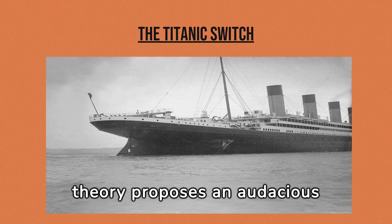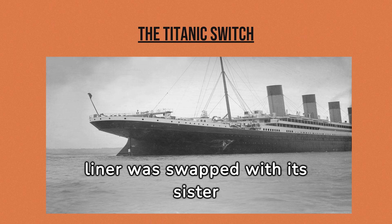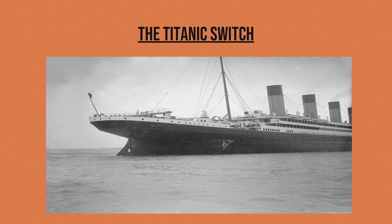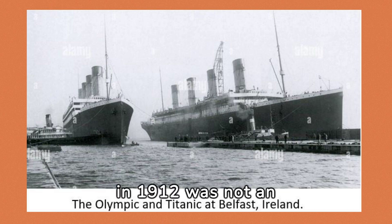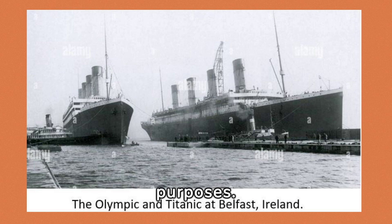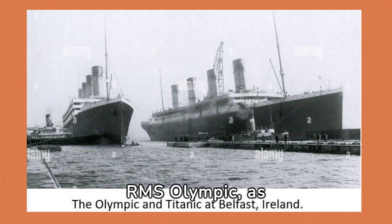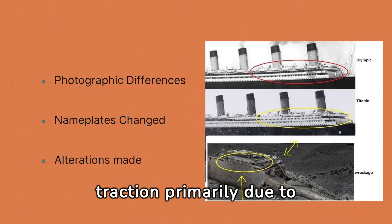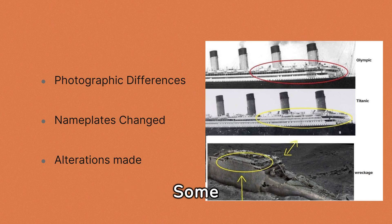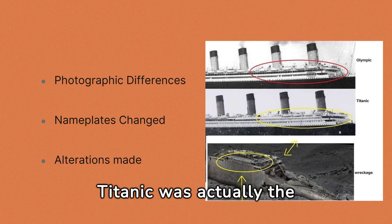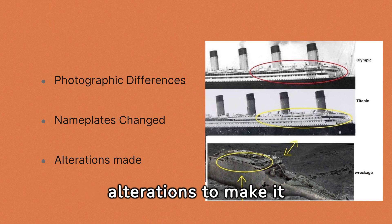This theory proposes an audacious insurance scam, suggesting the doomed liner was swapped with its sister ship in a deceitful bid for financial gain. The Titanic switch conspiracy theory suggests that the sinking of the RMS Titanic in 1912 was not an accident caused by hitting an iceberg, but rather a deliberate act orchestrated for financial gain or other nefarious purposes. According to proponents of this theory, the Titanic was switched with its sister ship, the RMS Olympic, as part of an insurance fraud scheme or political conspiracy. Some proponents claim that the Titanic was actually the Olympic disguised with new nameplates and other alterations to make it appear as the Titanic.